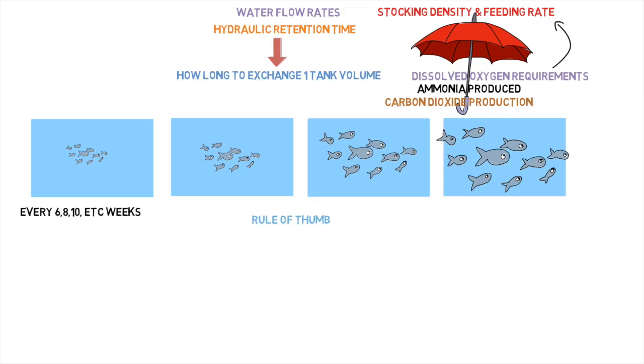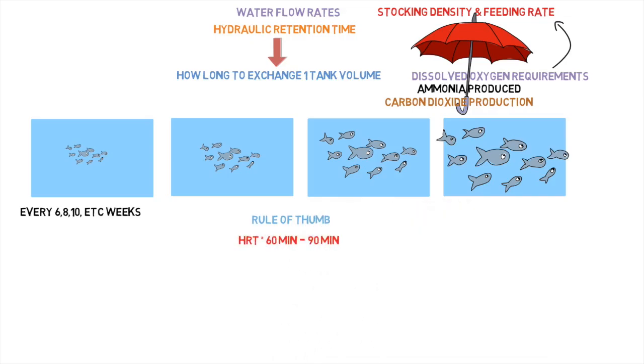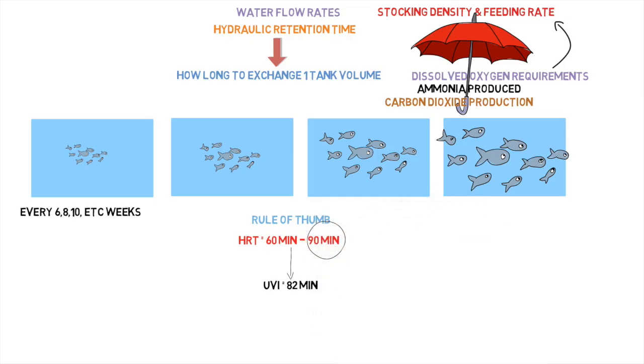And the rule of thumb that I like to apply is anywhere between 60 and 90 minutes of hydraulic retention time. The UVI, they use 82 in their system. But 60 on the very low, that's fast, rapid movement. That means every tank is exchanging once per hour, every 60 minutes, up to 90 minutes, which means we have an average of an hour and 30 minutes for each, for all of the tanks to exchange as a whole. So we're going to use for this example, we'll use 90 minutes.